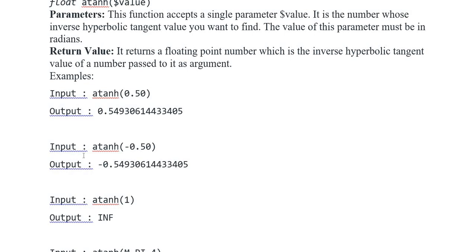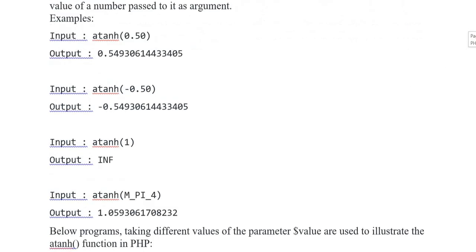Again, input atanh(-0.50), output is -0.5493061443405. Input again atanh(1) and the output is INF which is represented here.